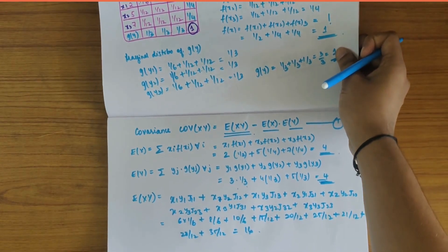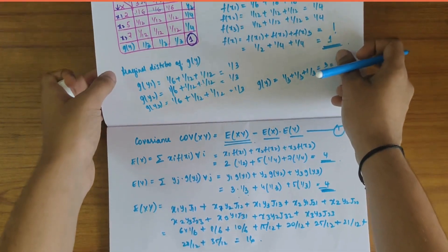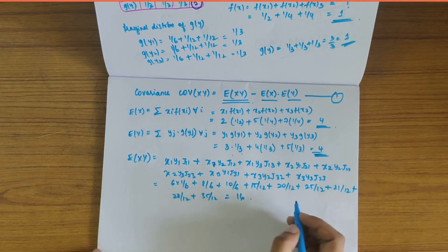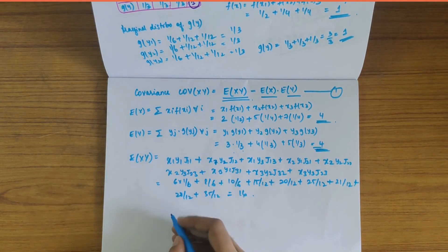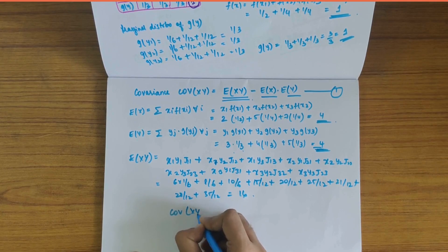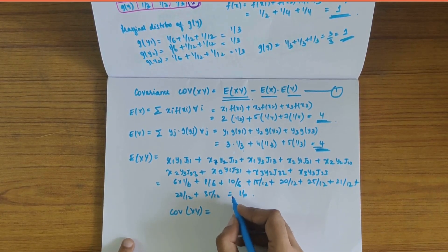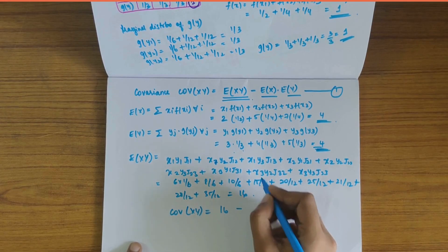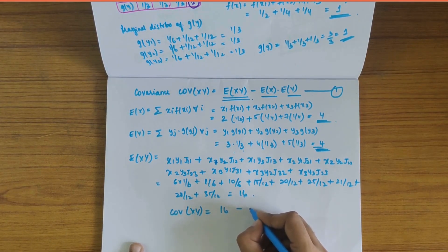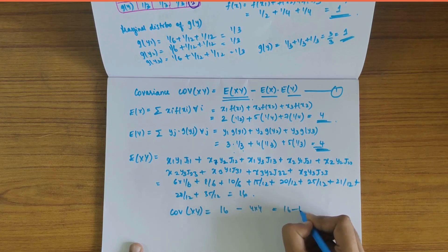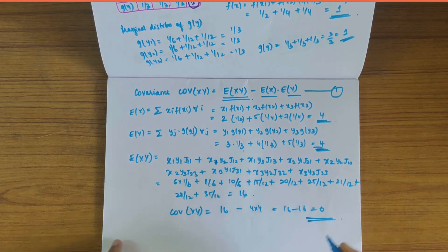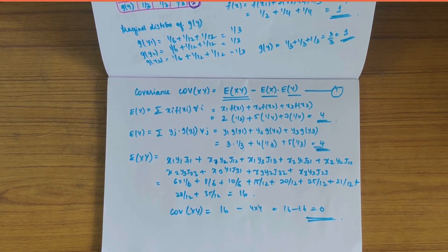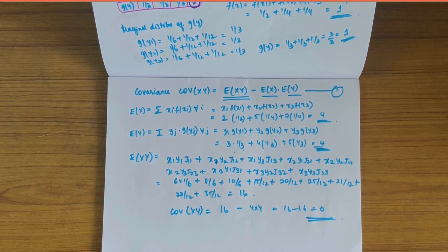We have found the values: E(xy) = 16, E(x) = 4, and E(y) = 4. Substituting all these values into the covariance formula: COV(x, y) = 16 − 4·4 = 16 − 16 = 0. Since the covariance value is 0, it shows that the random variables x and y are independent.